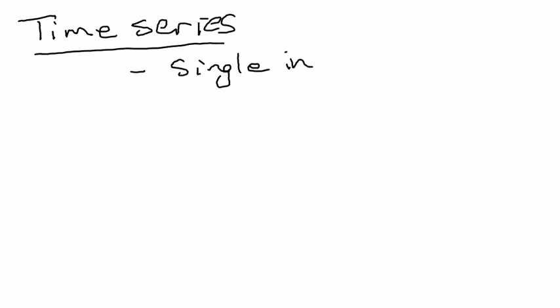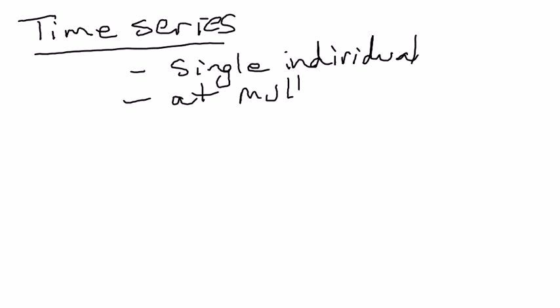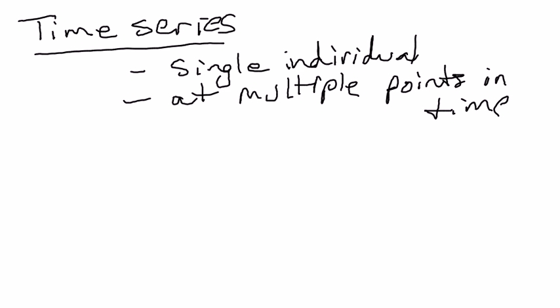The second type of data is time series data. Here you're generally looking at a single individual at multiple points in time. For example, if X were the unemployment rate in the United States, we might look at it in 1949, 1950, 1951, 1952, etc. We're observing a single entity — in this case the US unemployment rate — over multiple time periods. We put T in the subscript to indicate time series data.